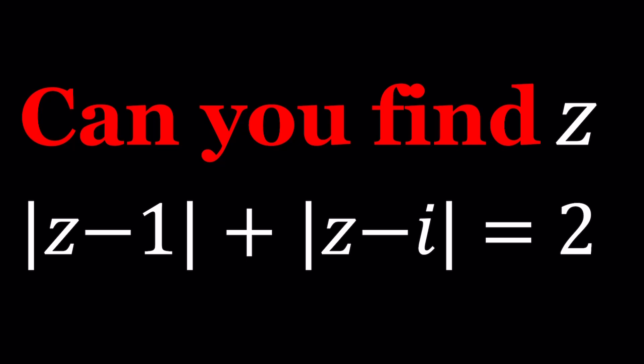And of course, you can generalize this. You can say, what is the locus for absolute value of Z minus Z sub 1 plus the absolute value of Z minus Z sub 2 equals some constant K?